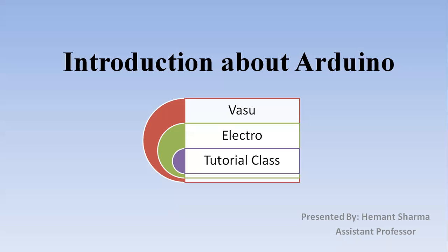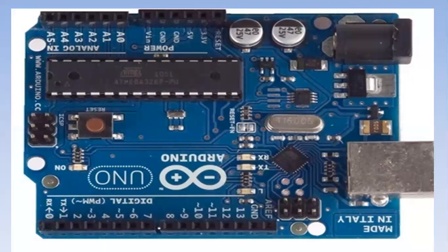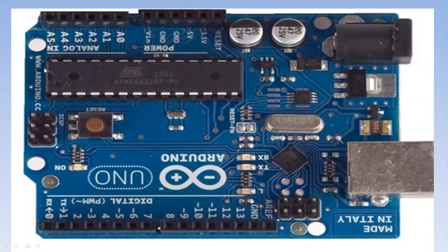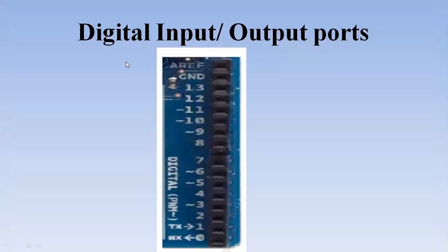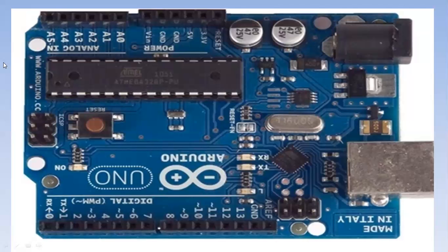Now I want to show you the Arduino UNO board. Here you can see the Arduino UNO board, and this is the most important part of it — this is a chip named as a microcontroller chip. Here you can see 'Atmel', which is actually the company name of this microcontroller chip.